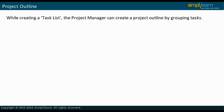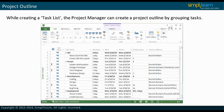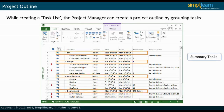While creating a task list, the project manager can create a project outline by grouping tasks. Tasks are grouped as summary tasks and subtasks. The screenshot of a software development project is displayed as an example on this slide. Related tasks are grouped under an appropriate title.